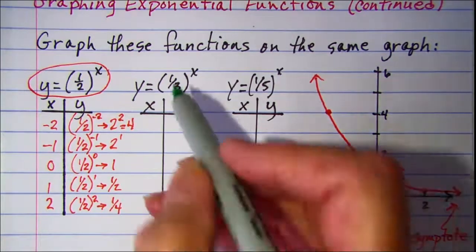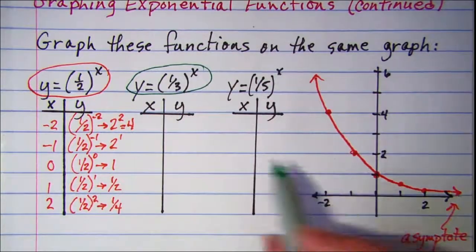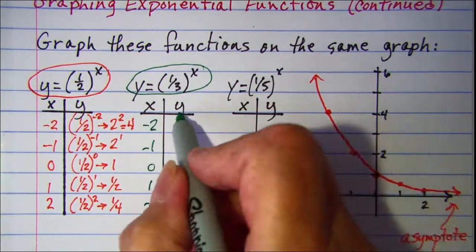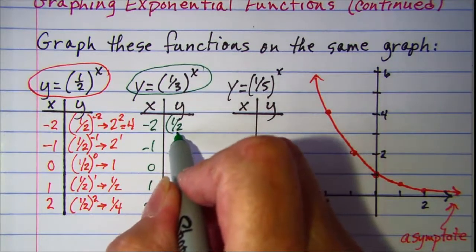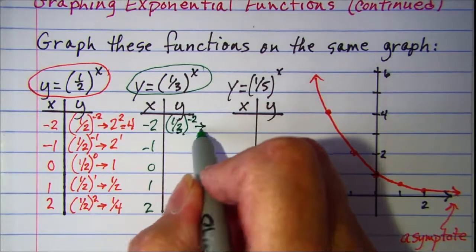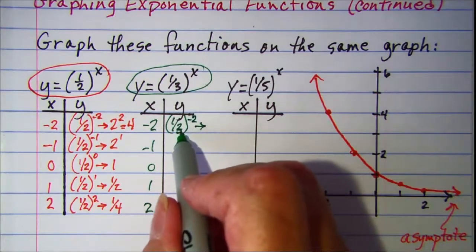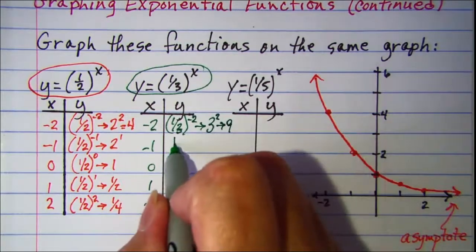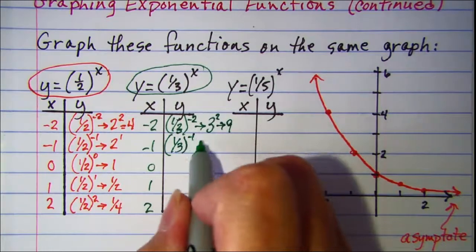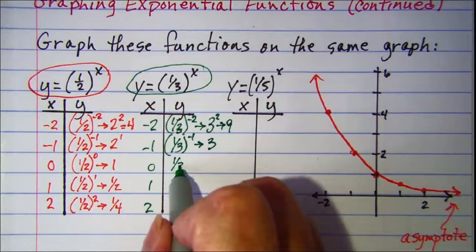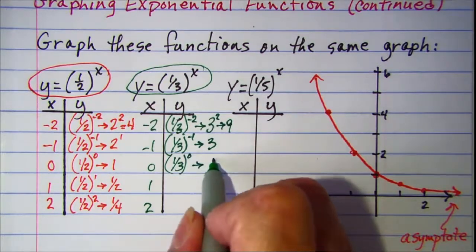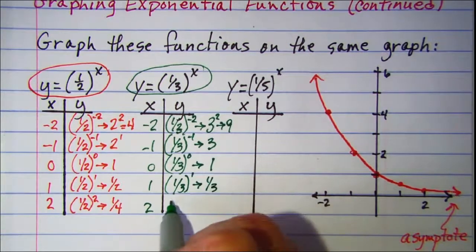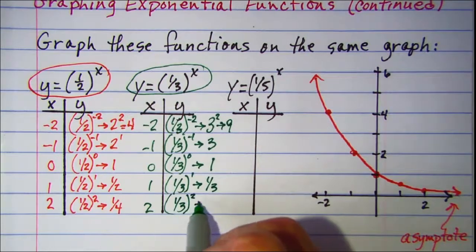Our next one that we'll be graphing is y equals one third raised to the x power. Again using x values of negative 2, negative 1, 0, 1, and 2. One third raised to the negative 2 gives us a reciprocal, so we're actually doing 3 to the second power, which is 9. One third raised to the negative 1 is 3. One third raised to the 0 is 1, since anything to the 0 is 1. One third to the 1 is one third, and one third to the second power is one ninth.